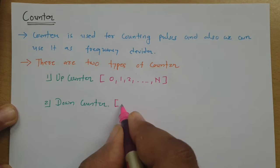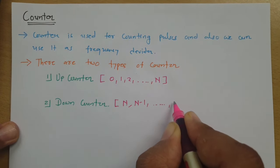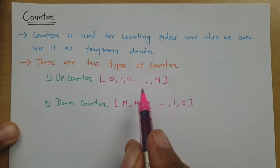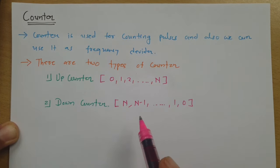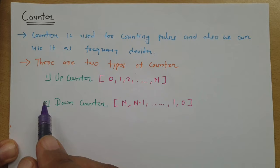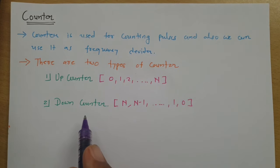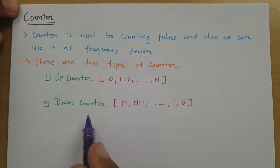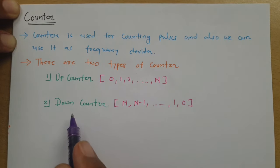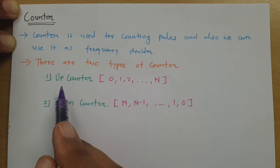In a down counter, it will initially have the maximum count, then the count decreases one by one until it reaches 0. So the up counter is an incremental counter and the down counter is a decremental counter. The up counter is used to count items — for example, in banks to count the number of notes. The down counter is used to see how much count remains, like in a football match timer showing how much time is left.